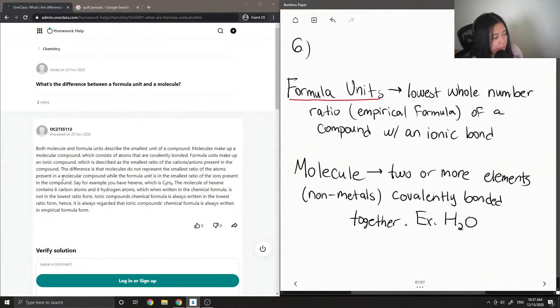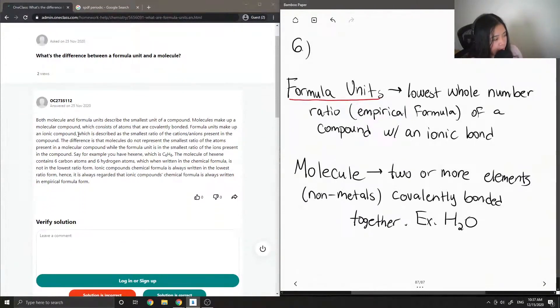So let's see what the junior tutor said. Both molecule and formula units describe the smallest unit of a compound. Molecules make up a molecular compound, which consists of atoms that are covalently bonded. Formula units make up an ionic compound, which is described as the smallest ratio of the cations and anions present in the compound.